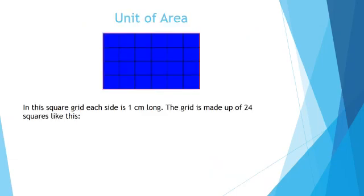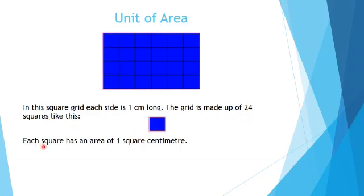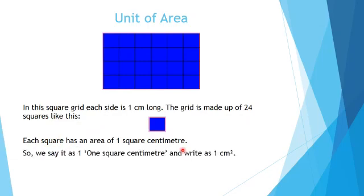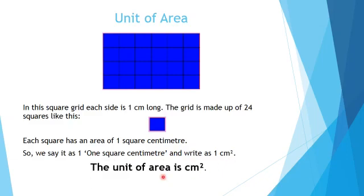Unit of area. In this square grid, each side is 1 centimeter long, and this grid is made up of 24 squares. Each square has an area of 1 square centimeter, written as 1 cm². Therefore, the unit of area is centimeter square.